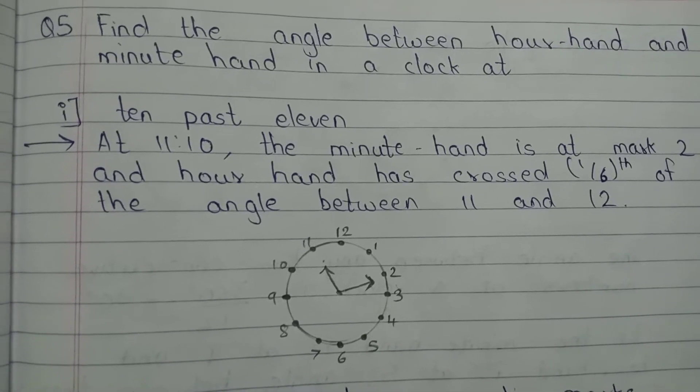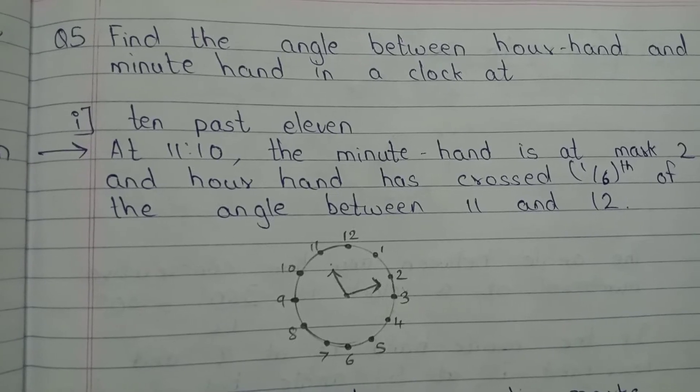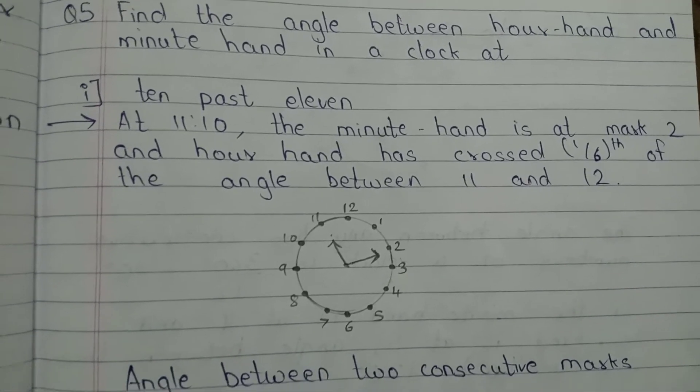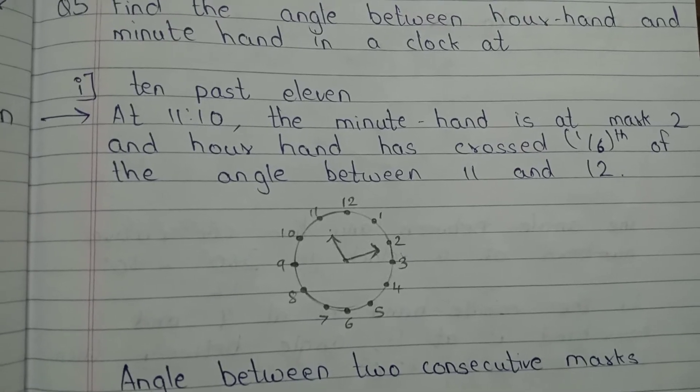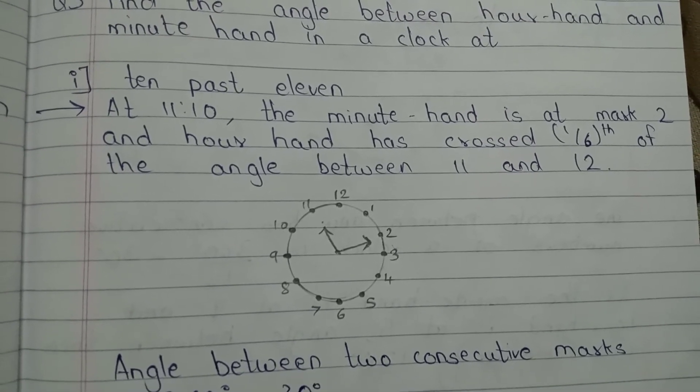Hi friends, so here is the question: find the angle between hour hand and minute hand in a clock at 10 past 11. So what is 10 past 11? That is 11:10. The minute hand is at mark 2.